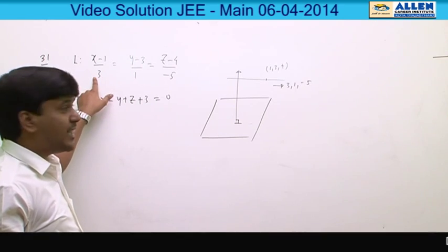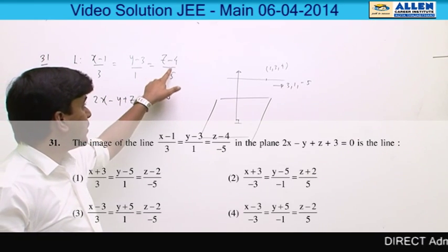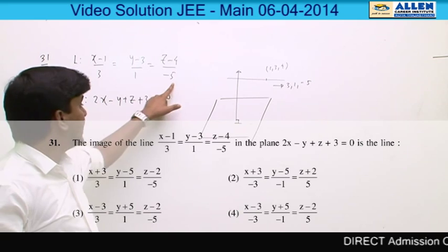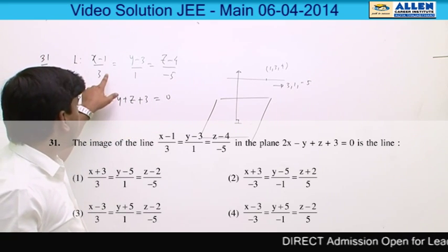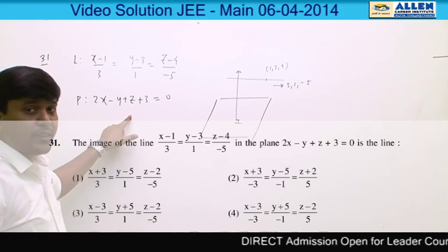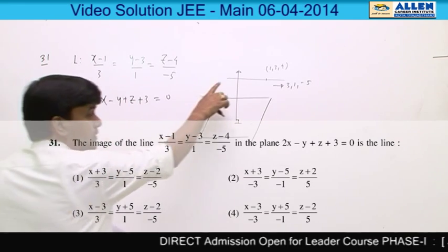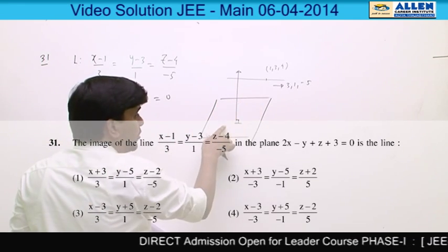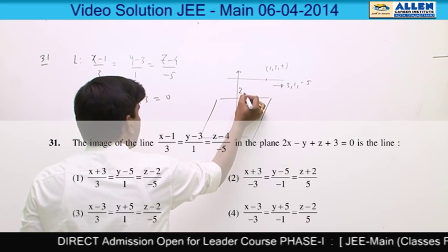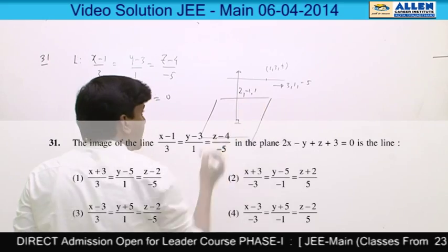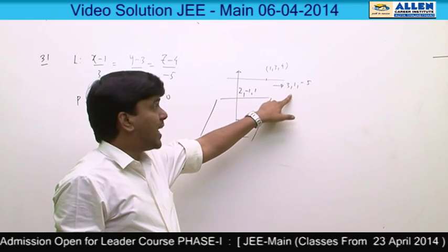Question number 31. A line is given: (x−1)/3 = (y−3)/1 = (z−4)/(−5), and there is a plane P. We have to find out the image of this line in this plane. We can see the line is parallel to the plane, as the direction ratio of the normal to this plane is (2, −1, 1), and its dot with the direction ratio of the line is 0.